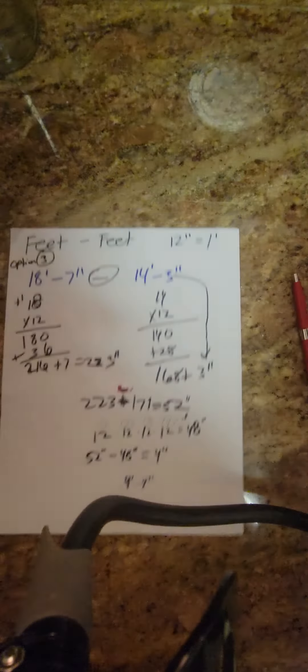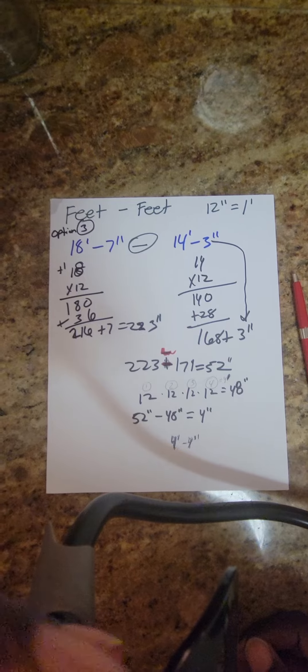For subtracting feet and inches, you check yourself by using a ruler or measuring tape. They all should come out the same, you don't have to worry if it was off, because you take your measuring tape and it'll come out the same way.